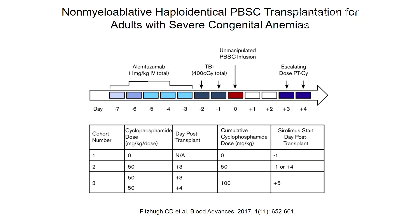We also offer haploidentical transplantation at the NIH, which is a half-matched transplant, so that parents, children, and half-matched siblings can serve as donors. Because the tissues are no longer a full match, there is a higher risk for graft rejection and graft-versus-host disease. Based on a murine model, we developed a protocol where all patients receive alemtuzumab, 400 cGy of radiation, and sirolimus. There were three different cohorts with a dose escalation of post-transplant cyclophosphamide. The first cohort did not receive any post-transplant cyclophosphamide.